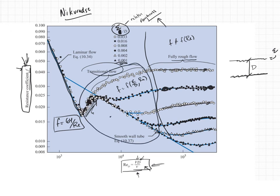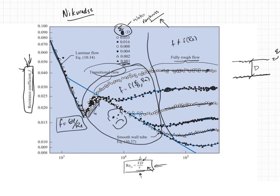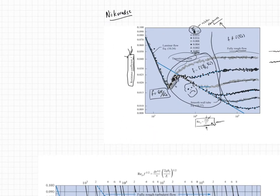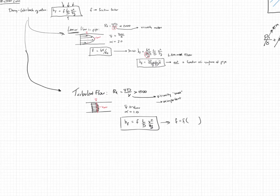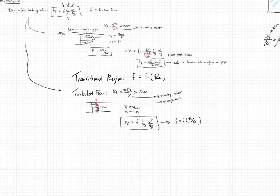Once you get into fully rough flow — way over to the right where the lines go flat — F is no longer a function of Reynolds number; it's only a function of relative roughness epsilon/D. So in this complete turbulence region, F is a function of epsilon/D only. In the transitional region, F is a function of both the Reynolds number and epsilon/D. The fully turbulent region is very easy to work with. The transitional region is the difficult one — you're unhappy there.